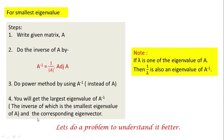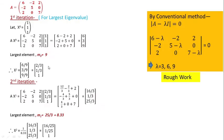You can also find the corresponding eigenvectors. These are the algorithms you have to follow. Let's do a problem to understand it better. Here is matrix A with elements: 6, −2, 2, 5, 0, 2, 0, 7. Let's first find out the largest eigenvalue.